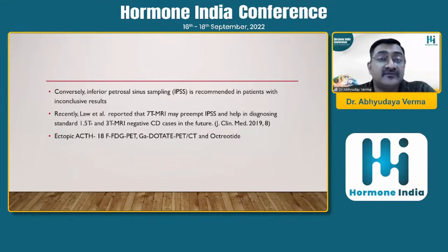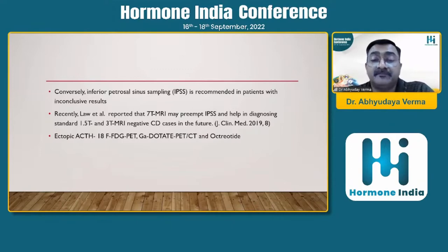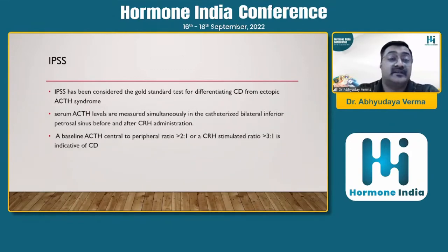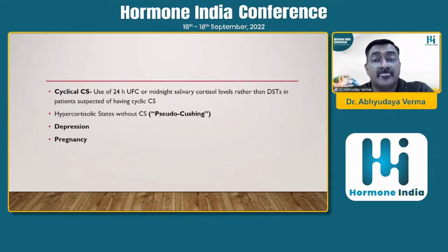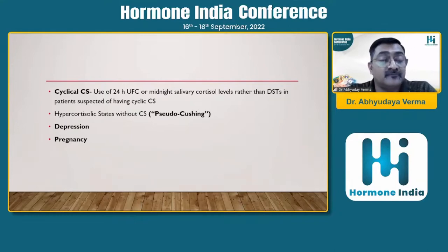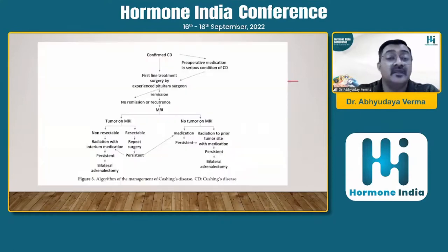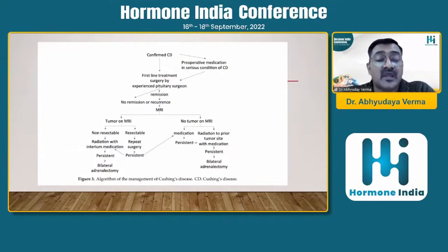Ectopic ACTH can be diagnosed with the help of ATNAF, FDG PET, gallium DOTATE PET, and CT/octreotide. IPSS remains the gold standard. We have different types of hypercortisolemia like cyclical Cushing's, pseudo Cushing's, and depression in pregnancy also. Now I come directly to the algorithm of the management of Cushing's disease, and then I will start on the medical management.